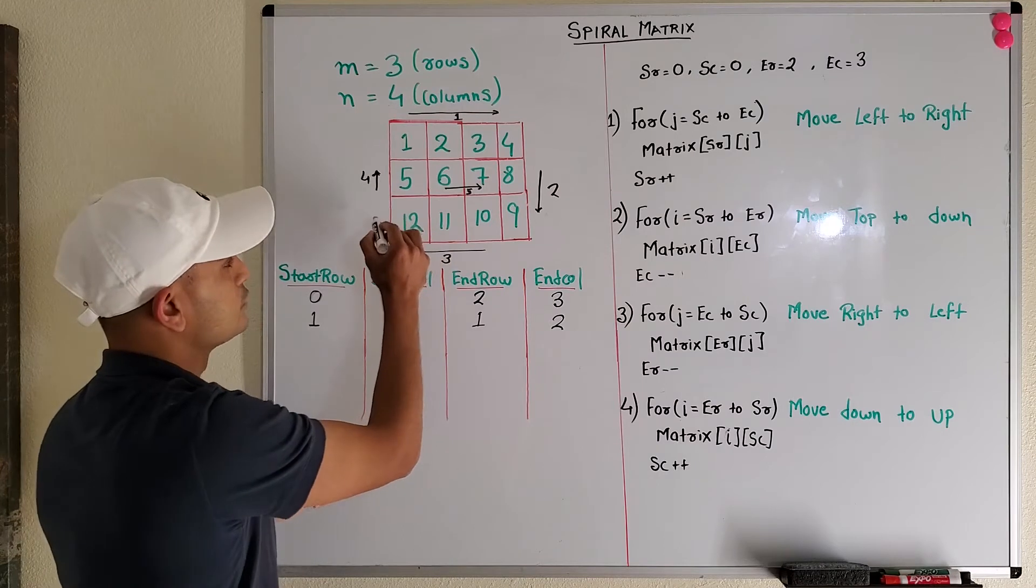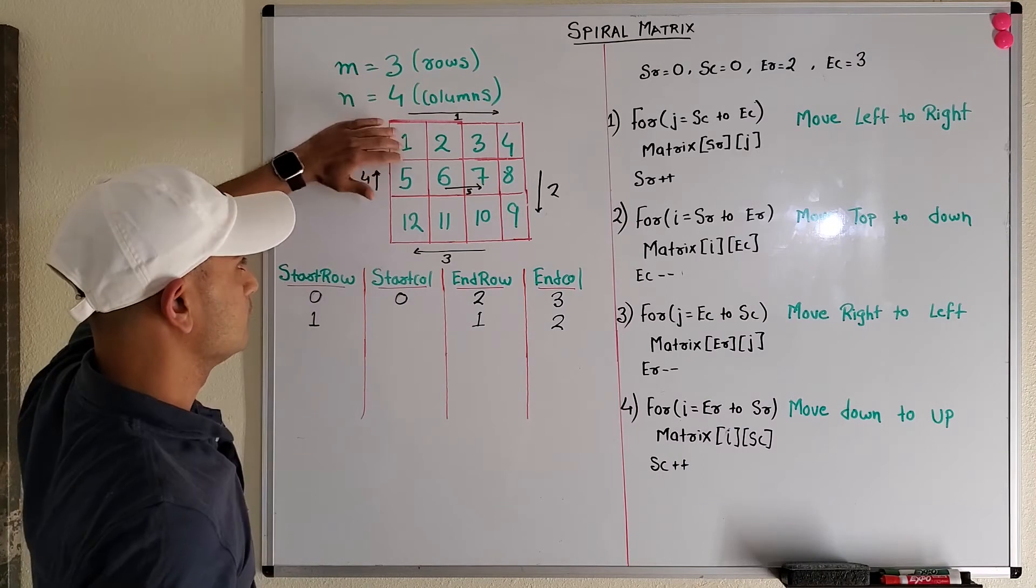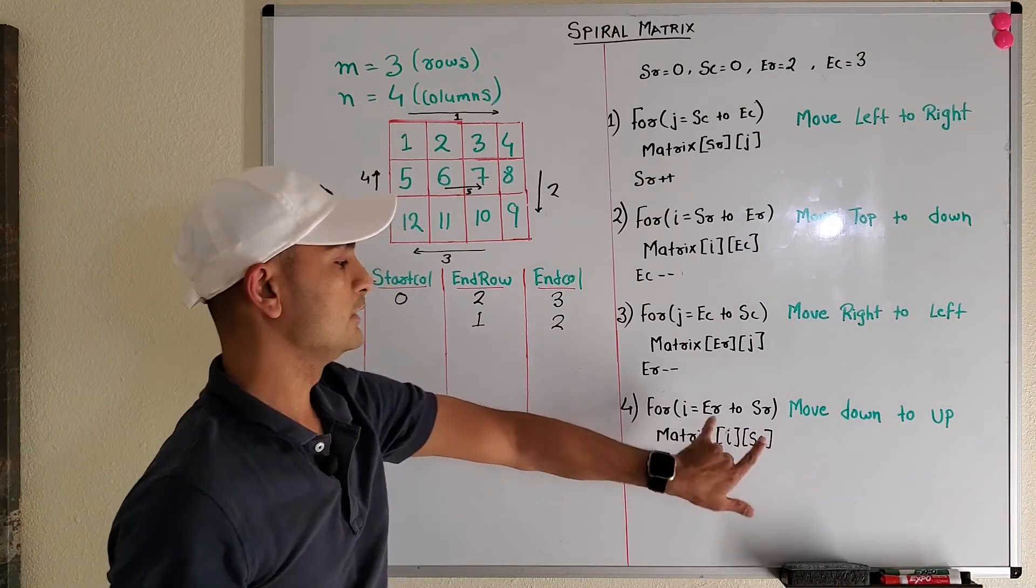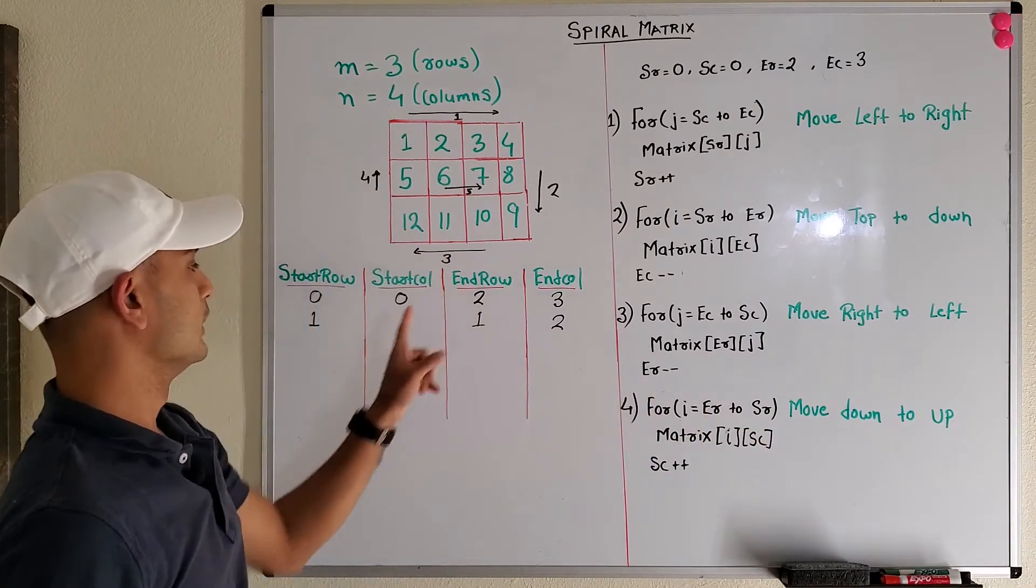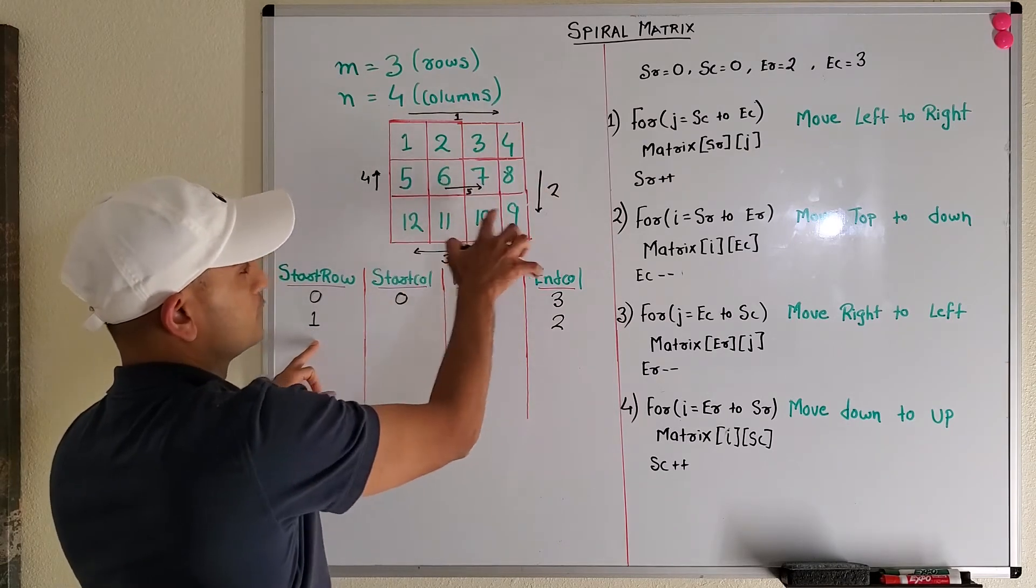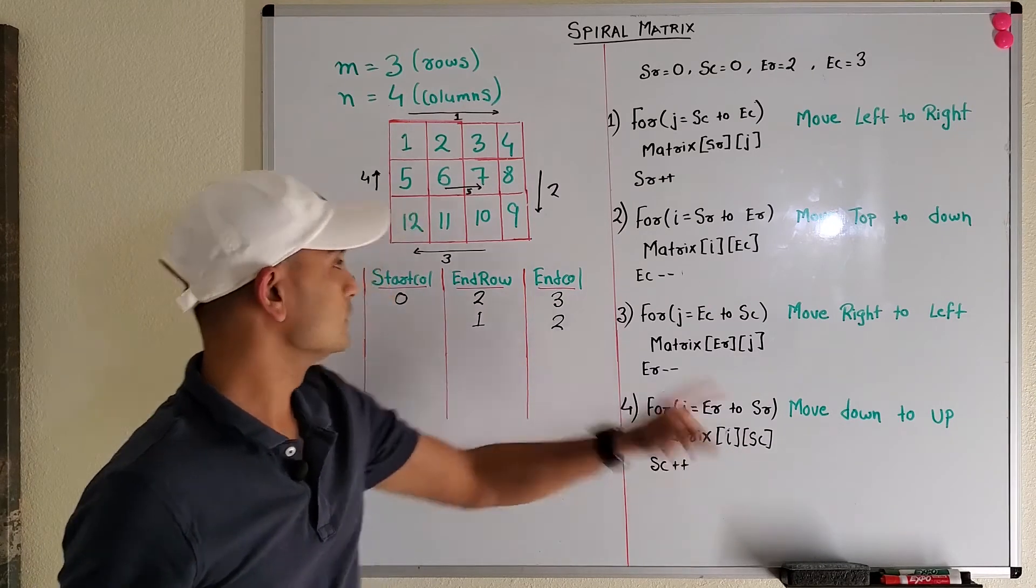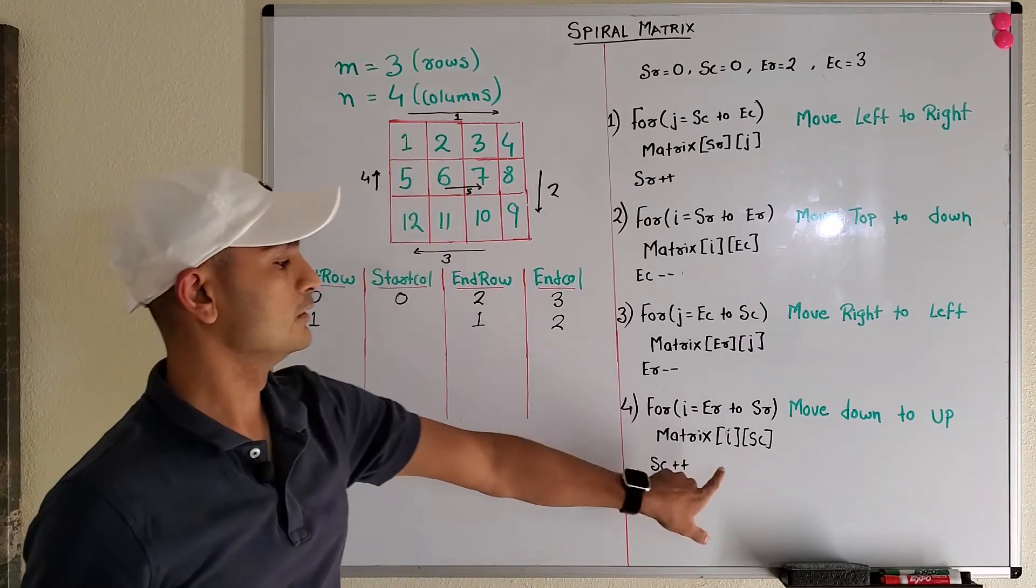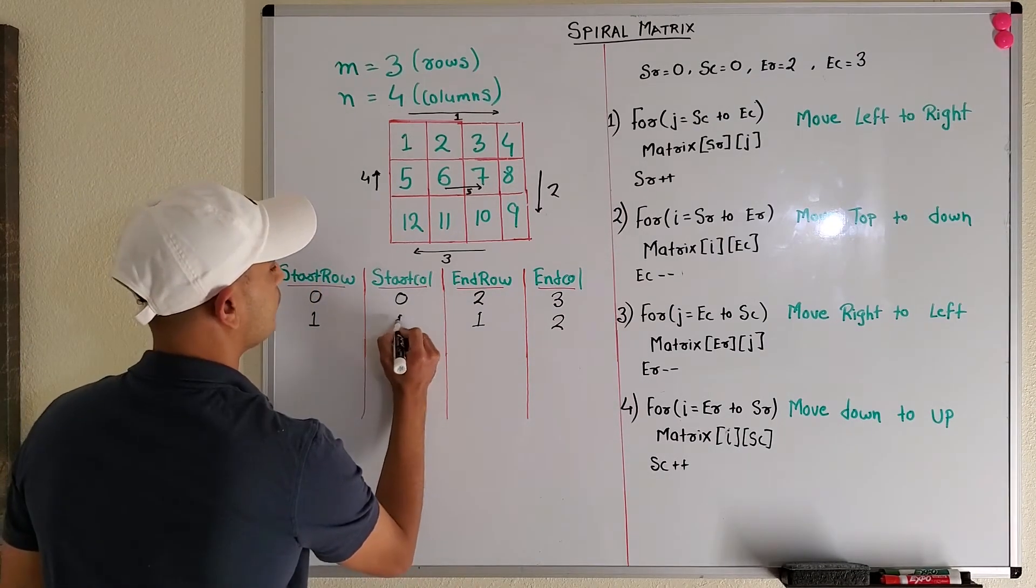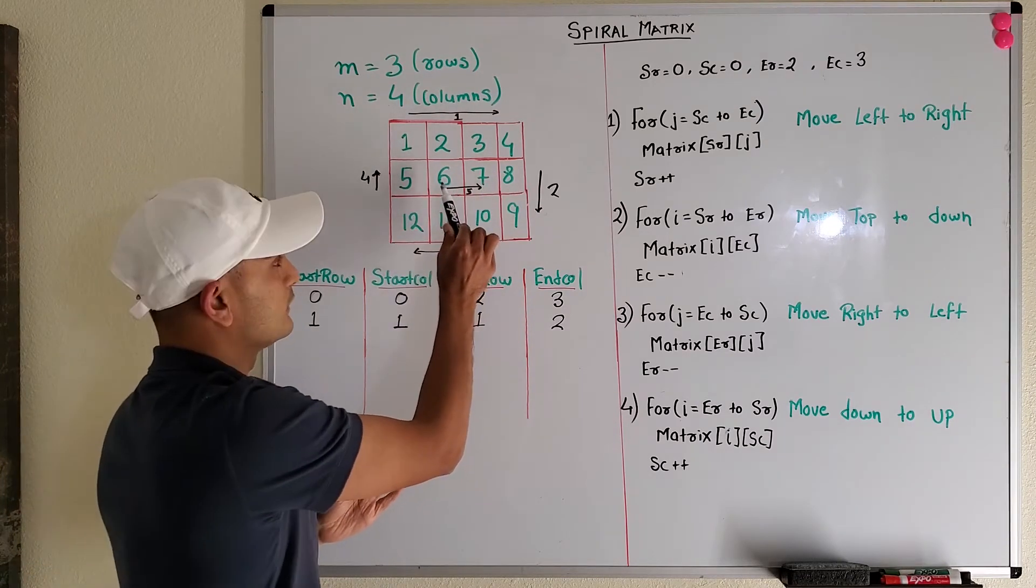We've done one, two, three, four, eight, nine, ten, eleven, twelve. Now we need to do five. This is my first column, so we use matrix of start column and we loop from end row to start row. Notice that end row and start row are both at one. We've done this and this, so the only row that is left is this. This will access only one number in the start column, which is this, and then we'll do start column plus plus. Start column becomes one.